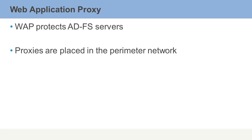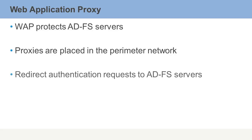There's usually something in a perimeter network to accept incoming requests. WAP does exactly that, and it will redirect the authentication request to the Active Directory Federated Services servers.